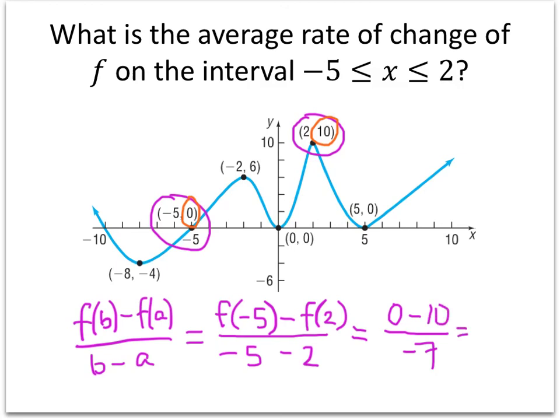0 minus 10 is negative 10. So we get negative 10 divided by negative 7, also known as 10 over 7. And that is our answer.